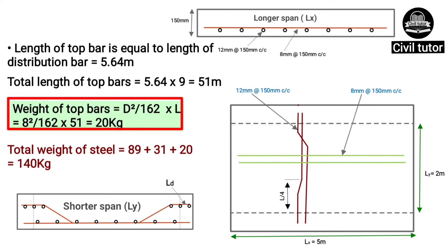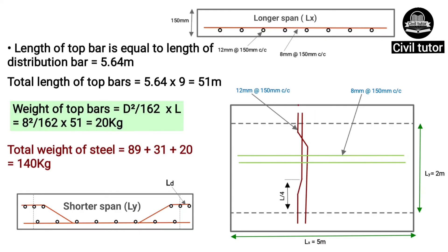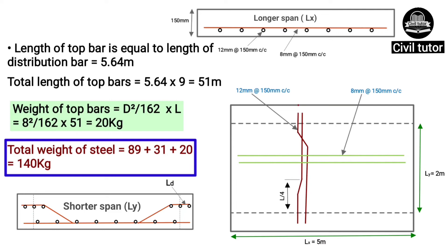Weight of top bars = D² ÷ 162 × total length of top bars. D is 8mm and total length is 51m. On substituting these values, the weight of top bars = 20kg. Finally, the total weight of steel = weight of main bars (89kg) + weight of distribution bars (31kg) + weight of top bars (20kg) = 140kg.